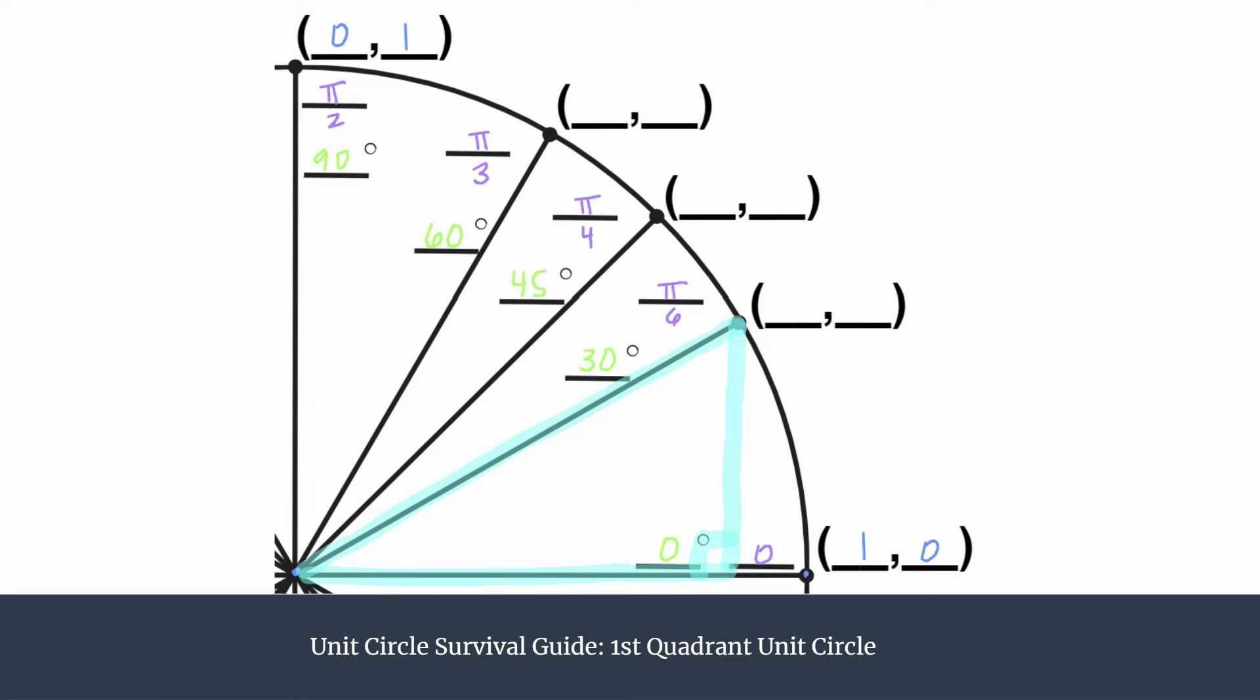But once you've seen how that works, you should know that the longer leg is labeled the square root of three over two, but that's about 0.87 as a decimal. And the shorter leg is one half.